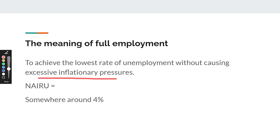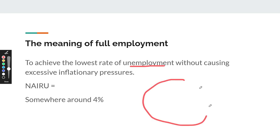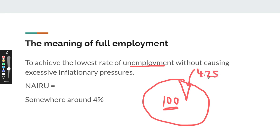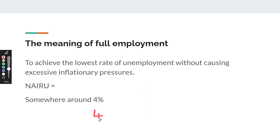That's the unemployment rate we're going to target: 4.25%. For now, you can think of it as: if we had 100 people who wanted a job, and we looked at how many people want a job but don't have one, and we found 4.25 people who didn't have a job but wanted one — well, as a percentage, that would be 4.25%. And that's our NIRU unemployment rate.